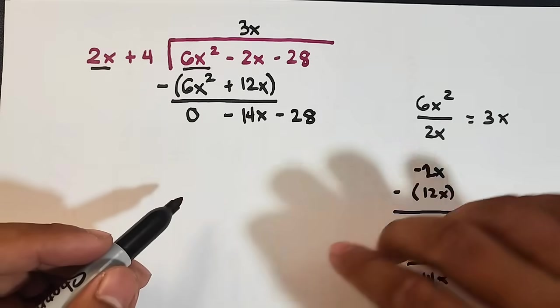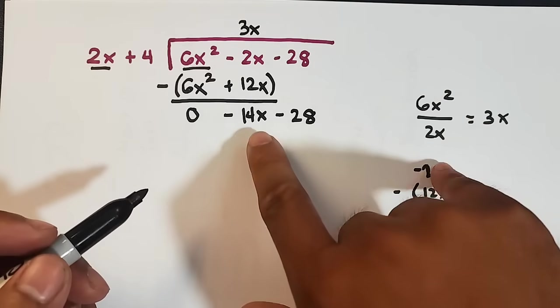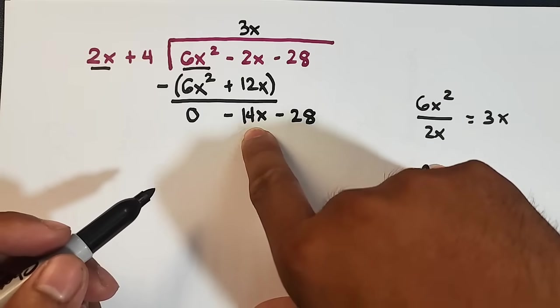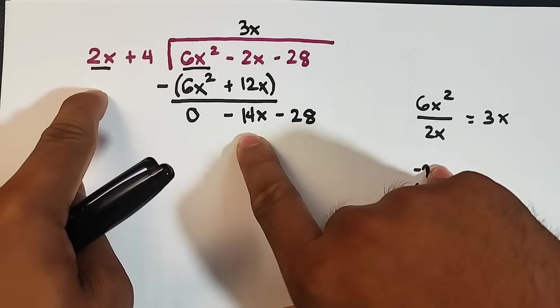Now, what's next? This is your new dividend. So same rotation, we divide. We divide the new leading term, which is negative 14x, by the leading term of your divisor.